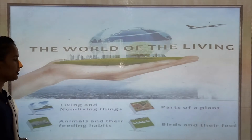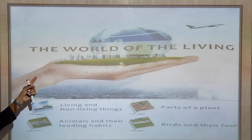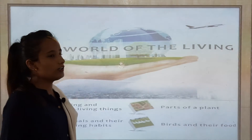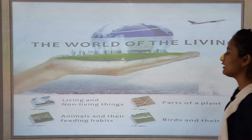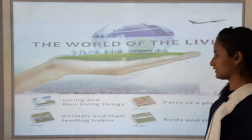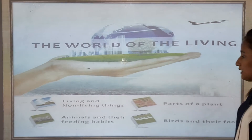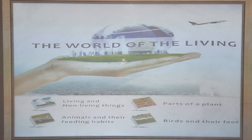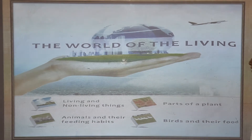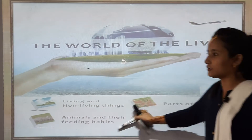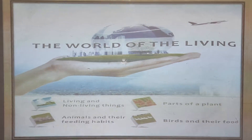On page number 29 you can see 'The World of the Living.' The world has living things as well as non-living things. So, living and non-living things, parts of plants, animals and their feeding habits, birds and their food — we are going to learn this chapter.